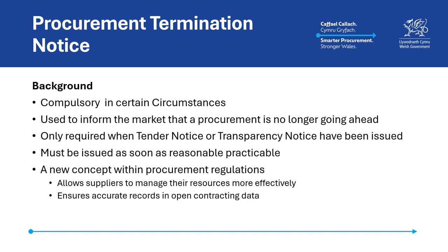Under the new regulations, each time a tender or transparency notice is created, it creates a public record in the data of any resulting contract. Failing to complete a procurement termination notice would therefore lead to a permanently incomplete data record for the procurement, and gives a false indication of the number of live procurements relating to a contracting authority.